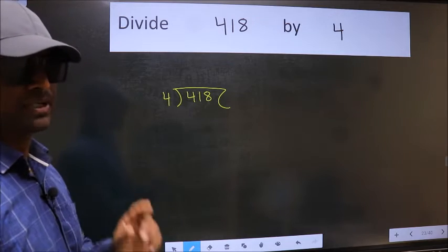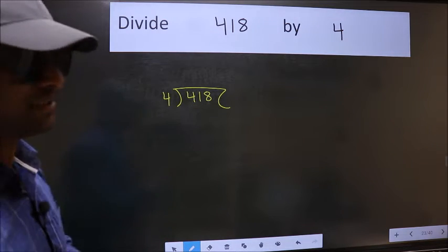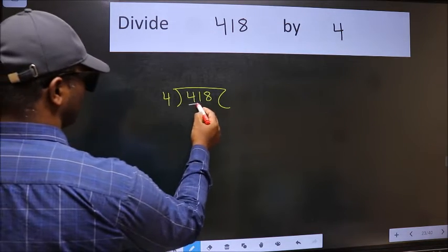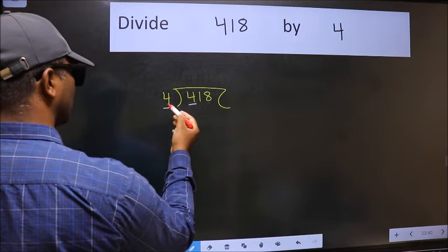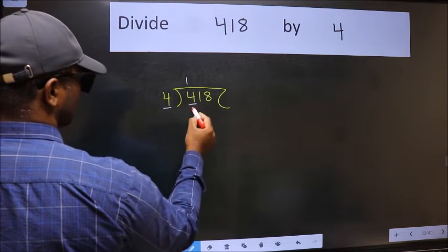This is step 1. Next, here we have 4 and here also 4. When do we get 4 in the 4 table? 4 times 1 is 4.